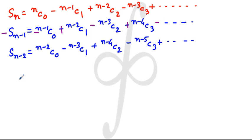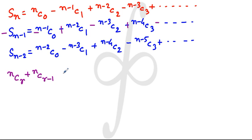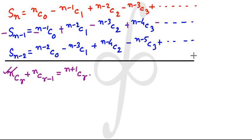Before applying any algebraic operation, let us revise a very important identity in combinatorics: nCr plus nCr-1 equals n+1Cr. We will use this identity when we add all three series together.